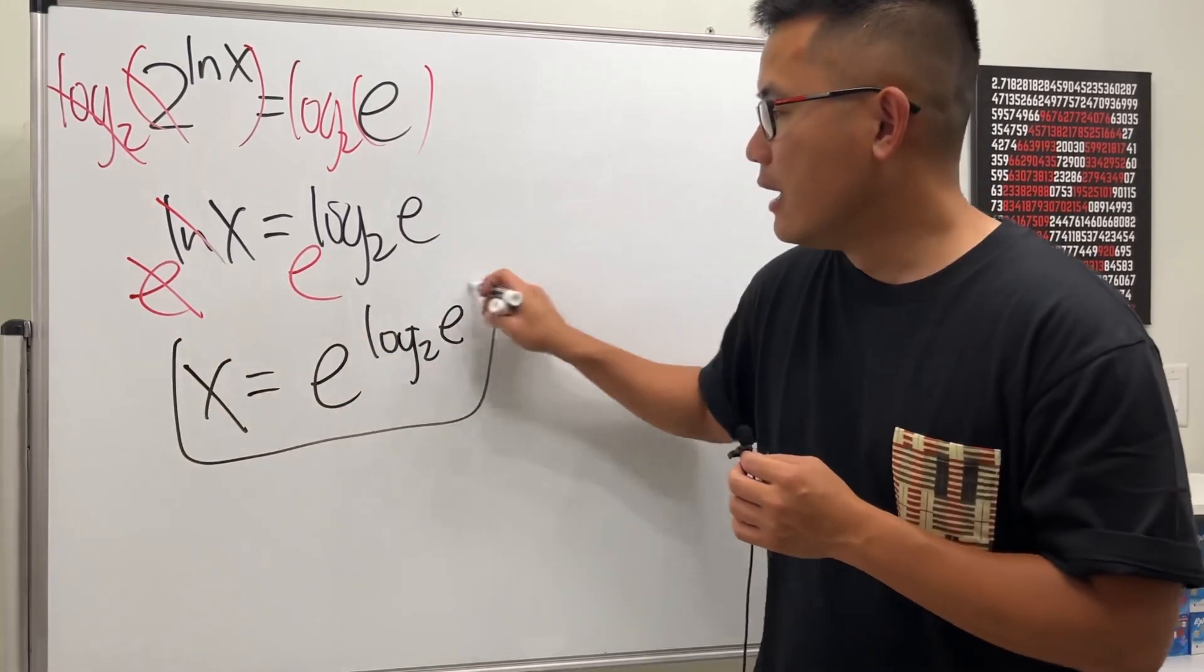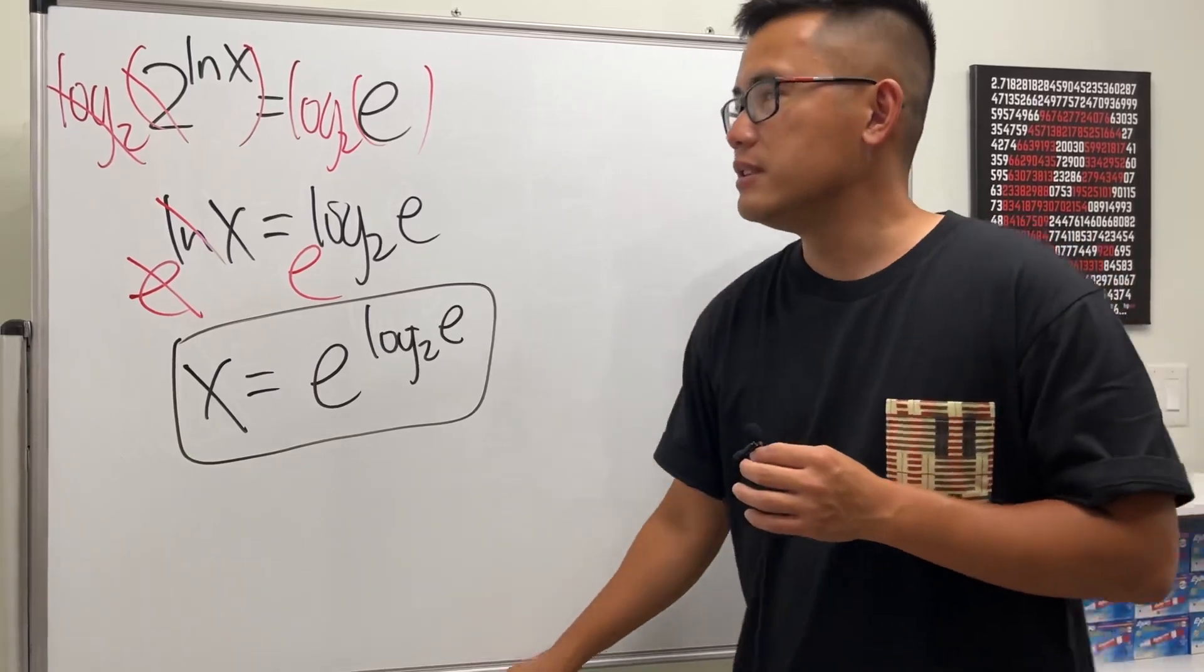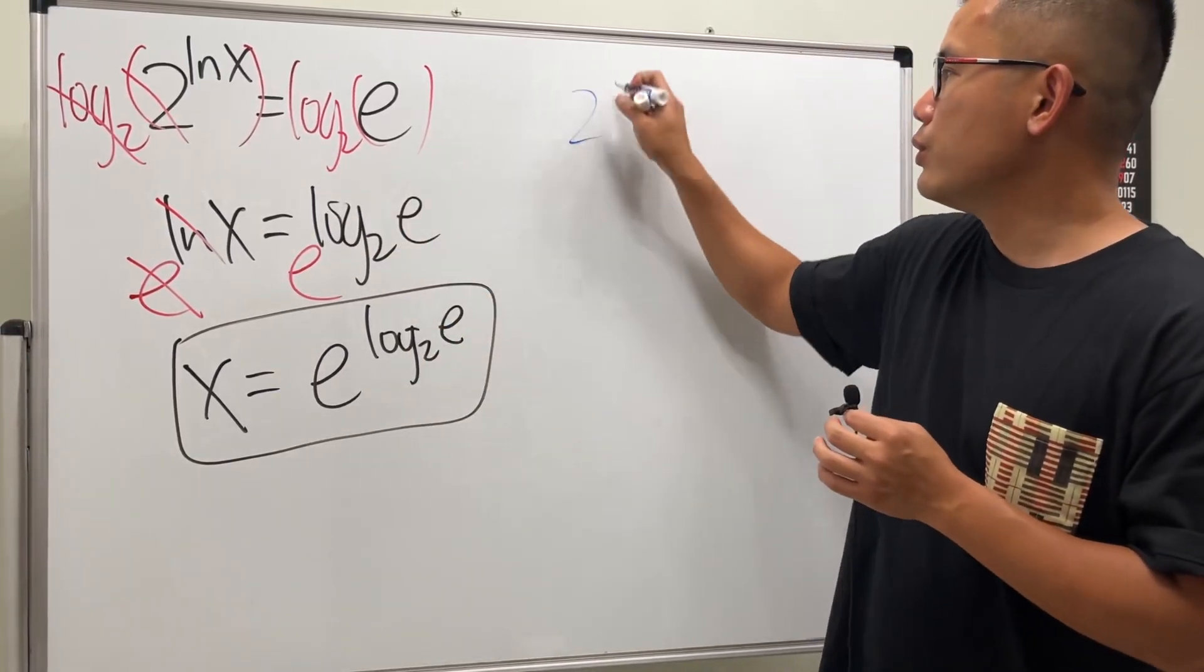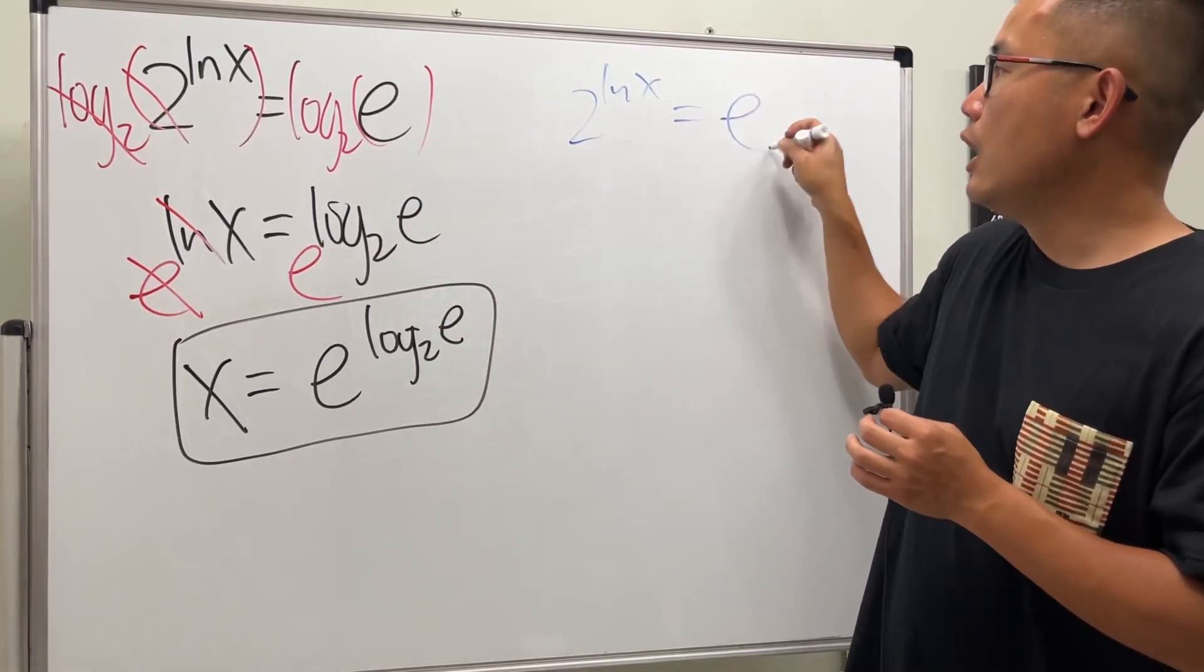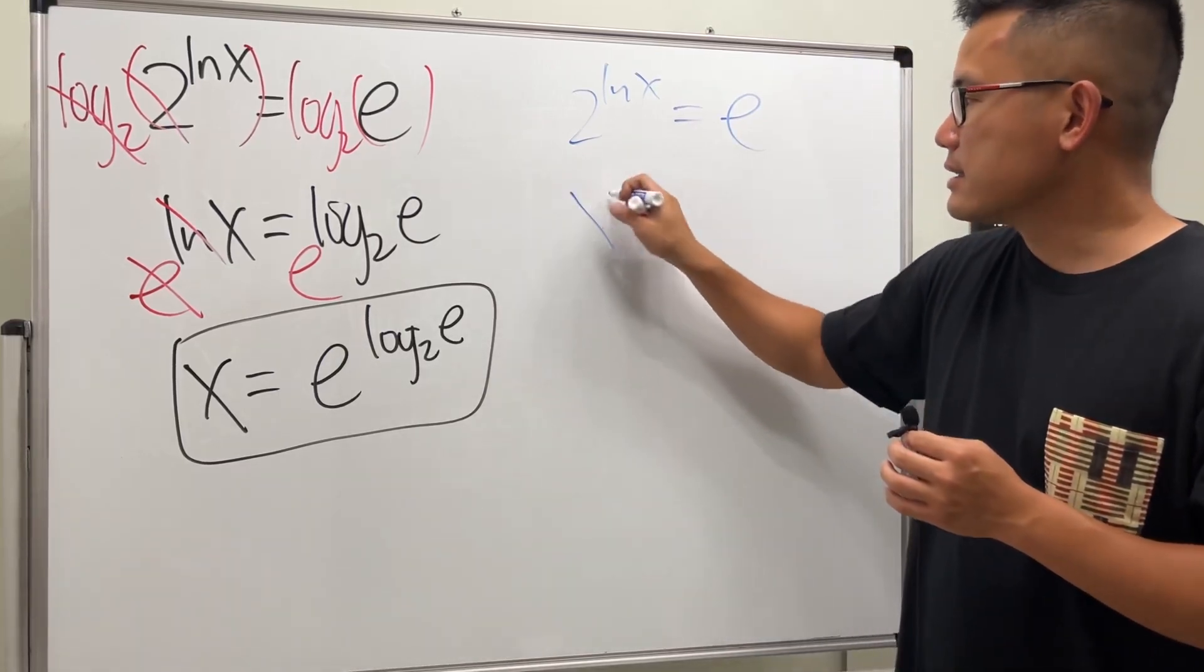And then we're done. But the truth is, we can actually solve this in a different way. When we have 2^(ln x) = e, we can rewrite this as x^(ln 2) = e.